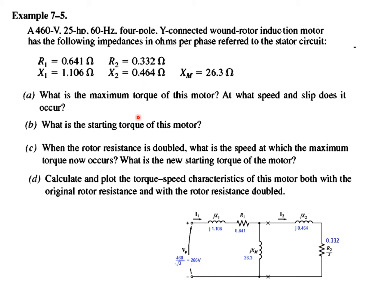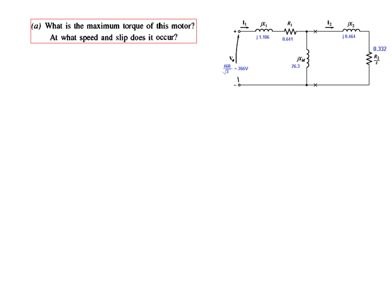The question has four parts. What is the maximum torque of this rotor and at what speed and slip? What is the starting torque? When the rotor's resistance is doubled, you have to calculate two parameters. And finally you have to plot the graph. So let's go to question number 1A. What is the maximum torque of this motor? At what speed and slip does this occur? So actually there are three questions.